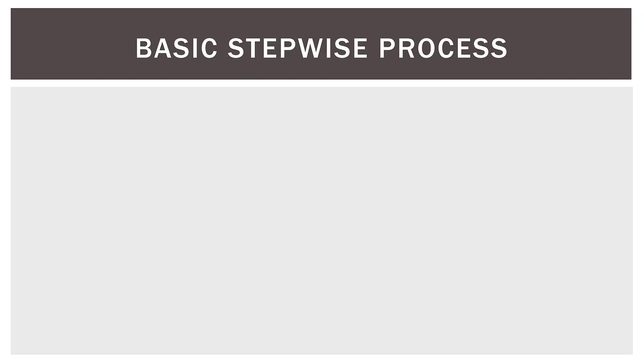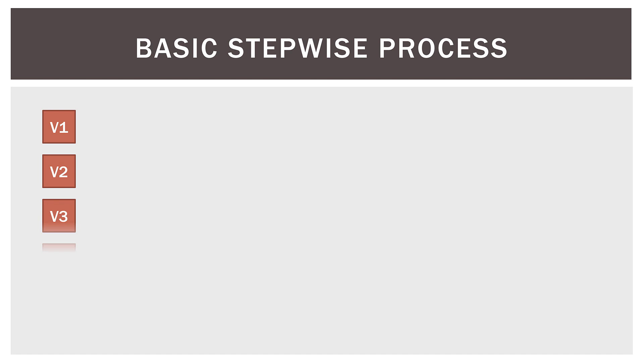So let's take a rough look at how this might work visually. This is a very rough process diagram, so forgive the graphical skills — but the thing to get from this is the process, not the artistic abilities. Let's say we have five feature variables. I'll reference them as V1, V2, V3, V4, and V5 for the rest of this example.